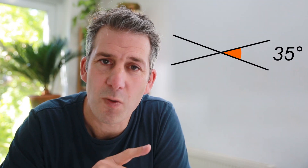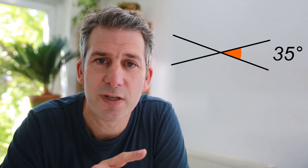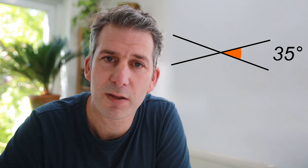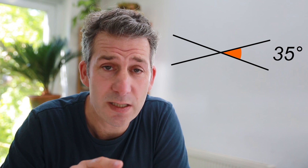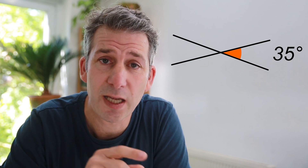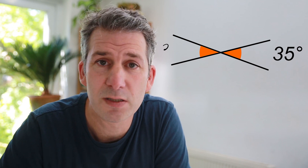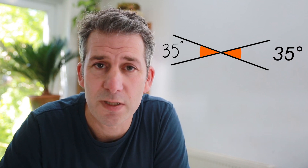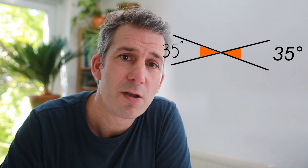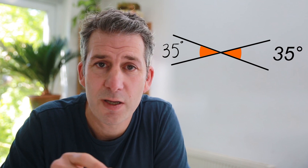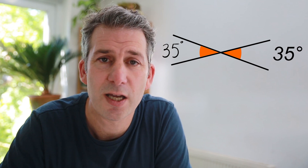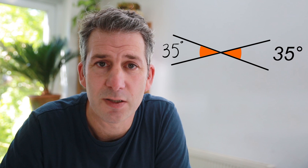Let's look at a question and see how we can apply that to a particular problem. We've got one angle here that's 35 degrees and we're going to work out what those other three missing angles are. Straight away, we can see we've got a vertically opposite angle, so the angle opposite that 35 degrees is just 35 degrees as well. If you remember from the start of the video, I mentioned about angles on a straight line adding up to 180 degrees.